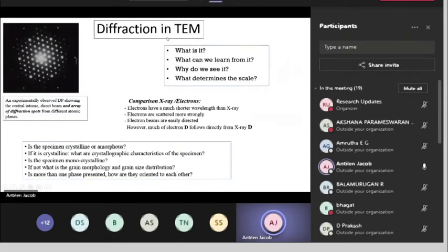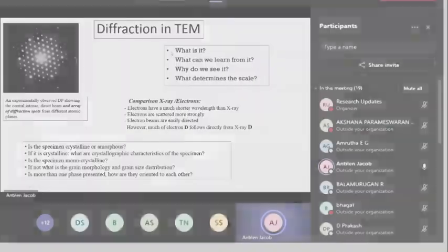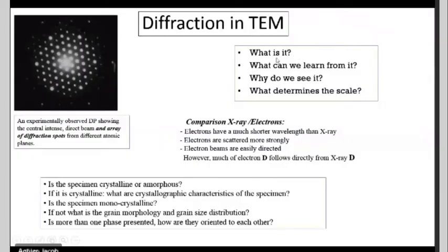Coming to the diffraction — in the left top corner you can see a typical image of an electron diffraction pattern. For beginners, you will be surprised about what these diffraction spots are and what we can extract from them. This diffraction is happening because of the wave nature of the electron in the TEM instrument.